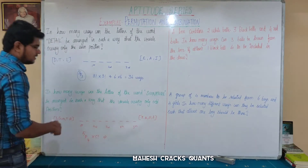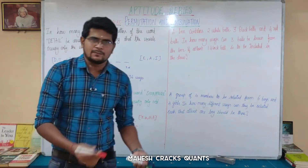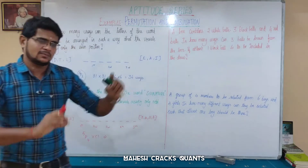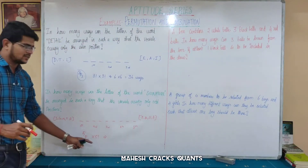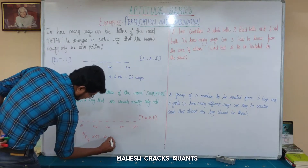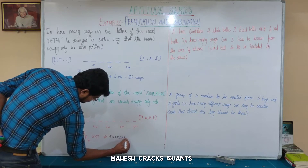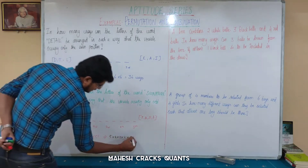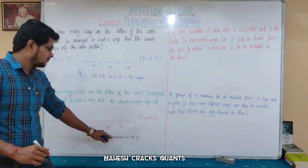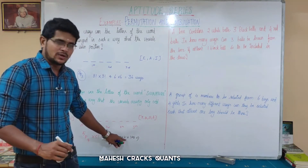So the vowels in odd positions: 5P4 = 5 × 4 × 3 × 2 = 120. And the remaining 5 consonants in 5 positions: 5 factorial = 120. So 5 into 4 is 20, 20 into 3 is 60, 60 into 2 is 120.